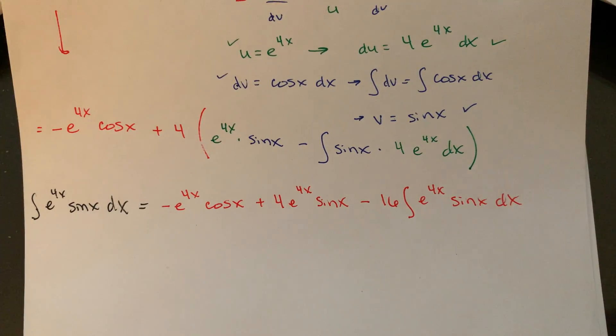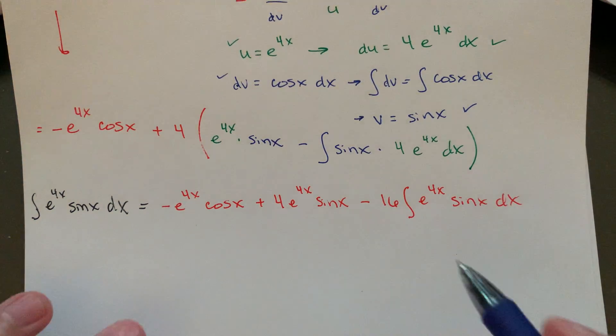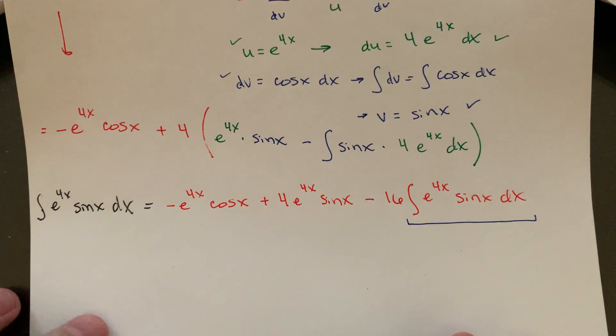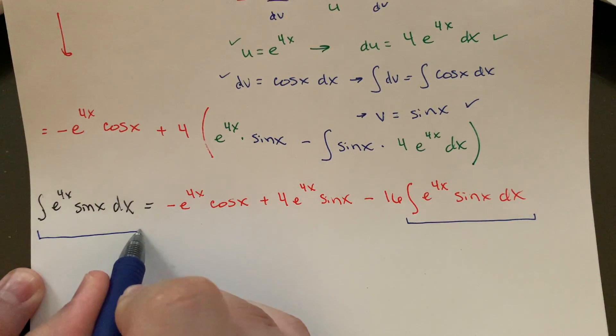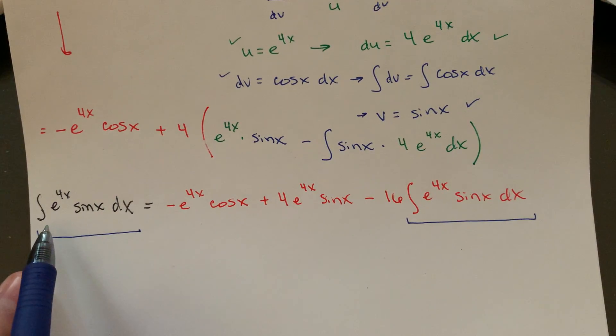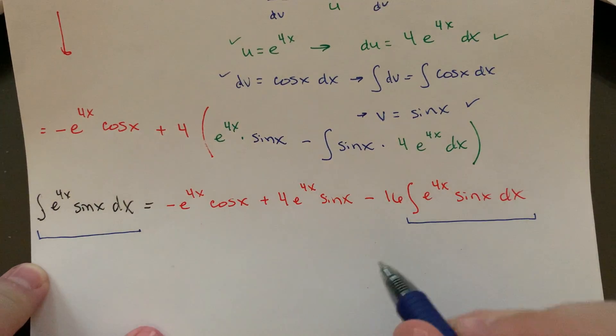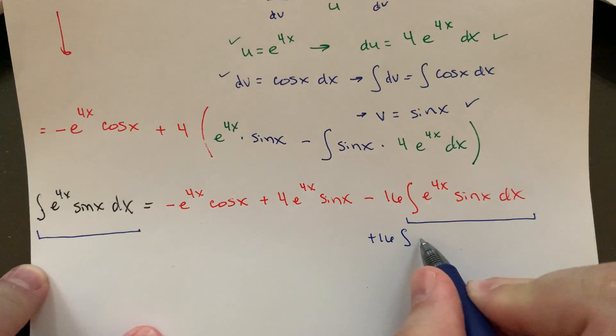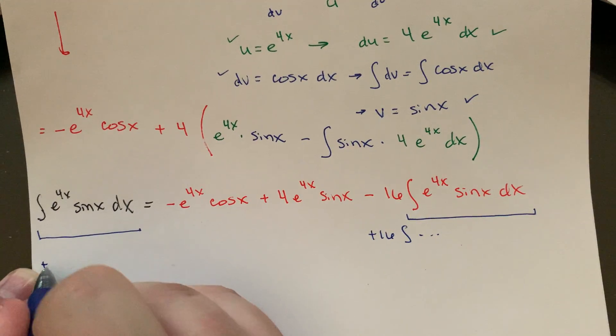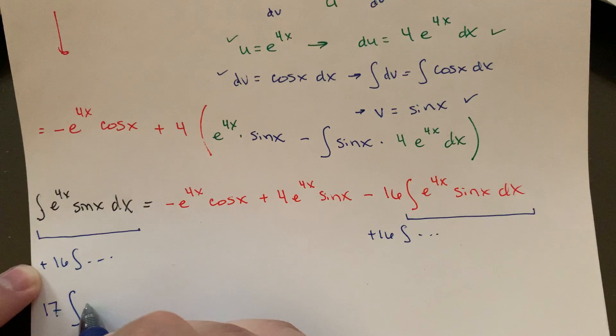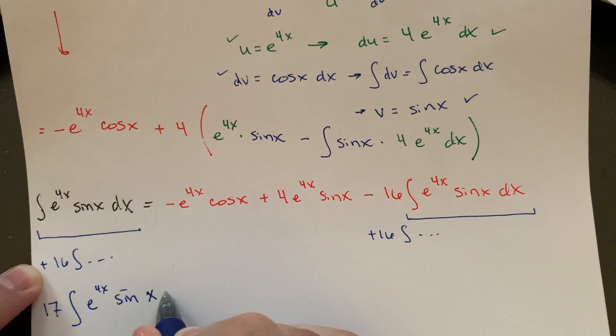So the key, the whole thing that this kind of hinges on is recognizing that this term, once it's re-cleaned up and rewritten, matches exactly with this. And so this is kind of one integral equals this plus this minus 16 of the same. So if I add 16 of the integral to both sides, that means I jump from 1 to 17, the integral e to the 4x sine x dx.